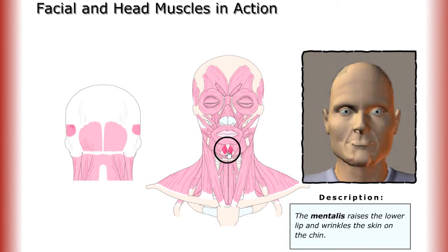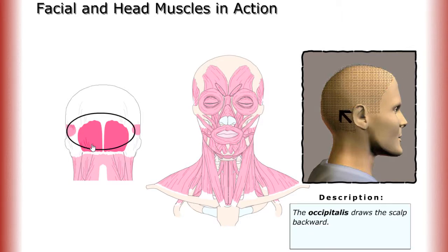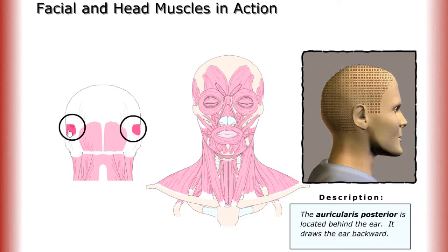Now let's take a look at two muscles on the back of the head. The occipitalis draws the scalp backward. The auricularis posterior is located behind the ear and draws the ear backward.